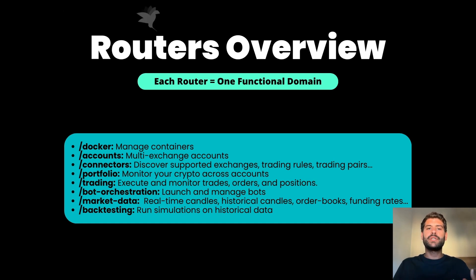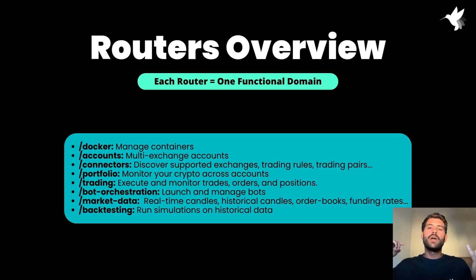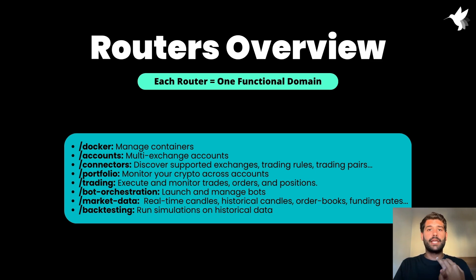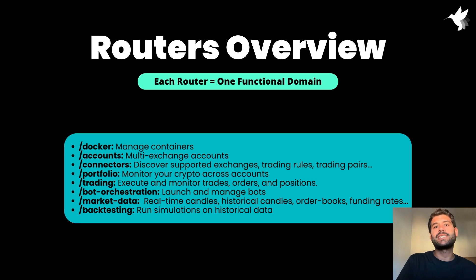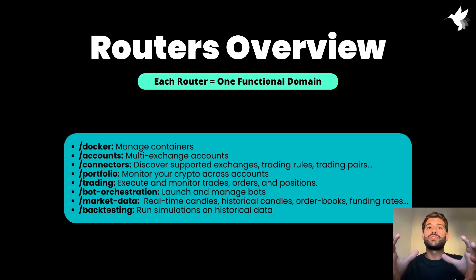The API is organized by routers, and each router has a specific domain. We have a router for Docker where you can see what containers are running, deploy a container with Hummingbot, stop a container, remove it, and clean up exited containers. All the Docker operations are here. What I'm doing is using the Docker socket of the host machine, passing that into the container and letting the Hummingbot API container use Docker from the host machine.